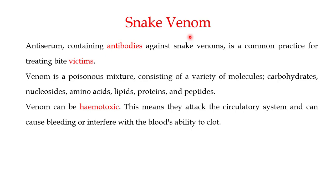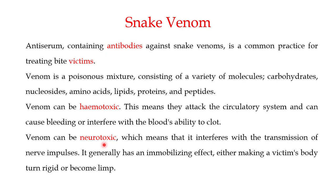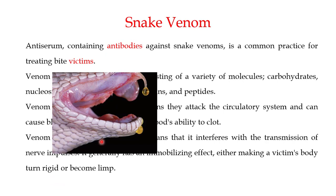There are different types of venoms — I won't go into full detail as it is not within the scope of this video. Some venoms are hemotoxic, meaning they attack the circulatory system and can cause bleeding or interfere with the blood's ability to clot. Other types of venom are neurotoxic, meaning they interfere with the transmission of nerve impulses. Neurotoxic venoms generally have an immobilizing effect, either making the victim's body turn rigid or become limp. So the two major types are hemotoxic and neurotoxic.